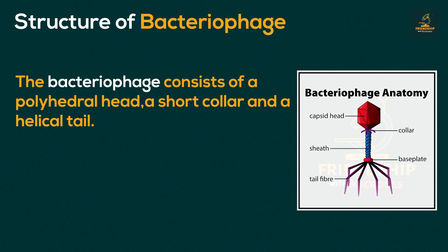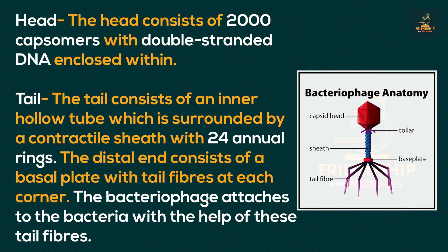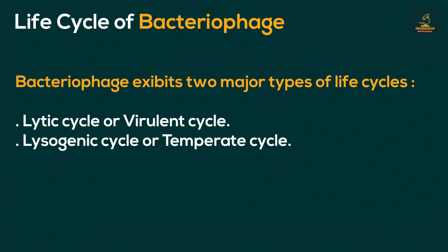The bacteriophage consists of a polyhedral head, a short collar, and a helical tail. The polyhedral head consists of 2000 capsomeres with double-stranded DNA enclosed within. The helical tail consists of an inner hollow tube surrounded by a contractile sheath with 24 annular rings. The distal end consists of a basal plate with tail fibers at each corner. The bacteriophage attaches to the bacteria with the help of these tail fibers.